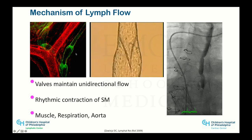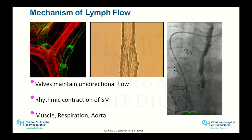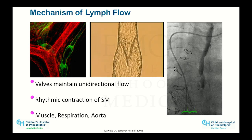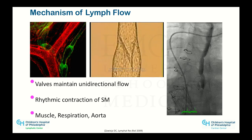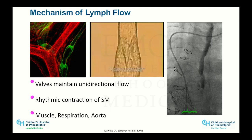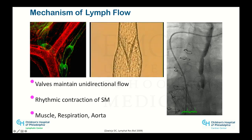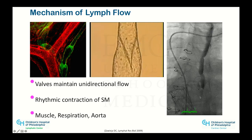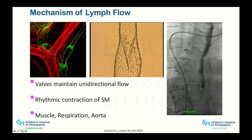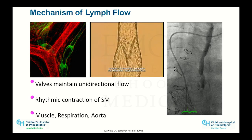If you have a system of pumping channels and need fluid to go forward, unless there's coordination, you need something to make the fluid move in one direction. So there are valves everywhere, and these valves need to function for the system to function. This is what lymphatic capillaries and valves look like — this is a human patient with heart failure because the thoracic duct is very dilated. You can see the lymphatic valves clearly here.